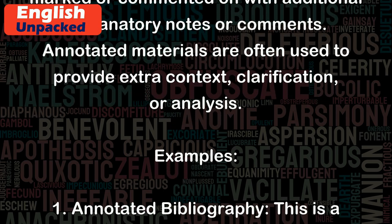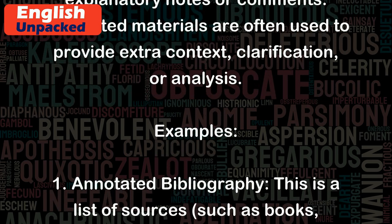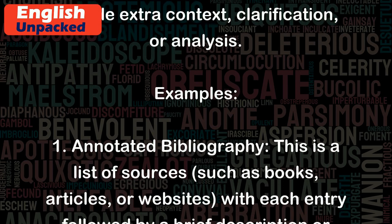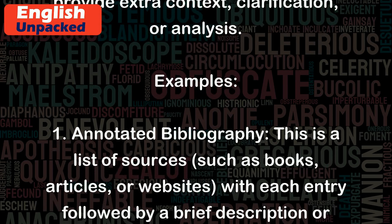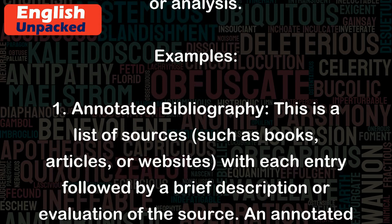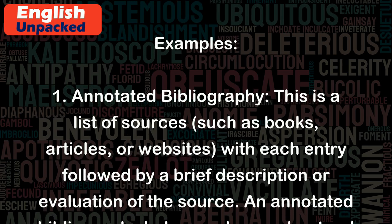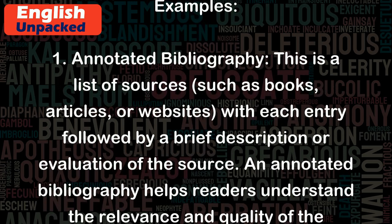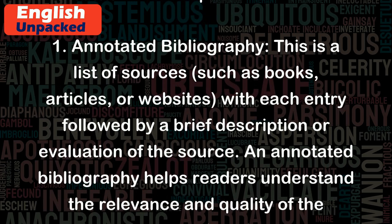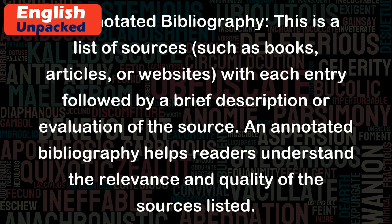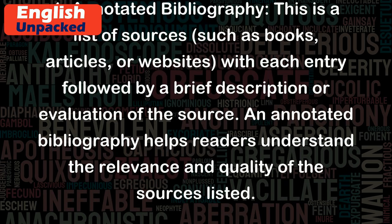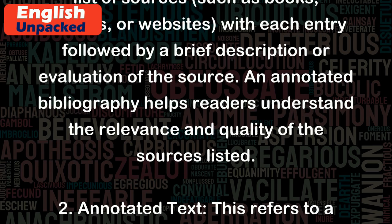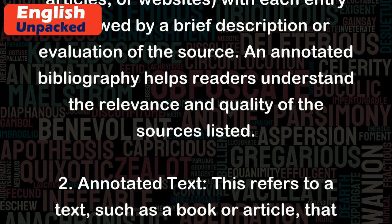Example 1: Annotated bibliography. This is a list of sources, such as books, articles, or websites, with each entry followed by a brief description or evaluation of the source. An annotated bibliography helps readers understand the relevance and quality of the sources listed.